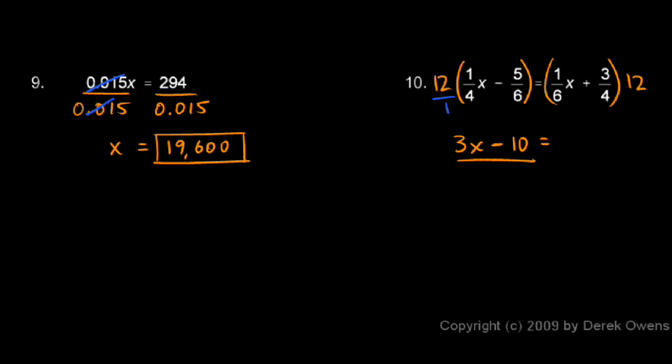Notice that the fractions are all gone now. Multiplying by 12 cleared the fractions out. Something very similar will happen on the right-hand side over here too.